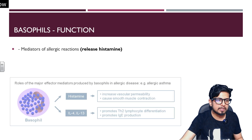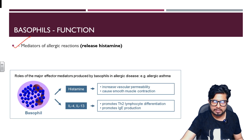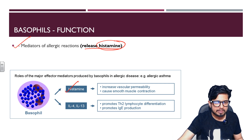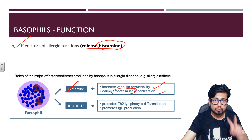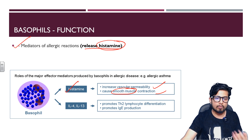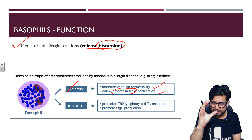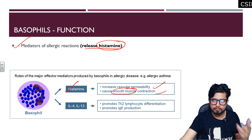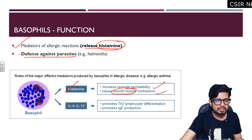The primary function of basophils is to mediate allergic reactions by releasing histamines, leukotrienes, and prostaglandins. Histamine release increases vascular permeability and causes smooth muscle contraction. In severe allergic reactions, excessive histamine causes vasodilation and airway constriction due to smooth muscle contraction.